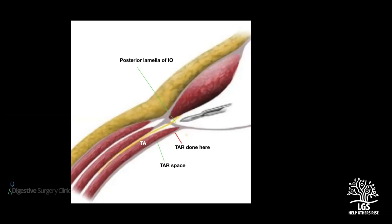TAR is possible because researchers like Dr. Novitsky and Dr. Rosen identified in cadaver studies that the transversus abdominis muscle does not limit itself where the external and internal oblique end — it actually goes medially behind the rectus abdominis muscle. That particular distance allows us to cut the transversus abdominis at this layer and reach the space between transversus abdominis and fascia transversalis.